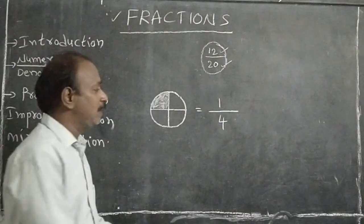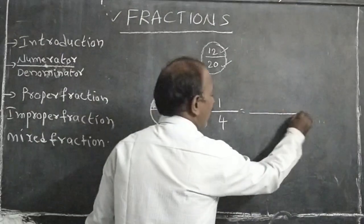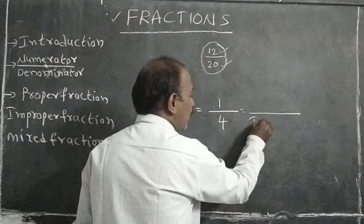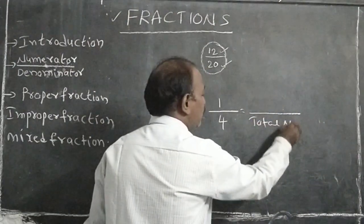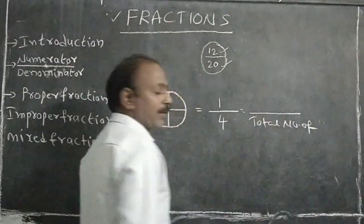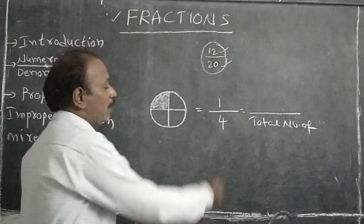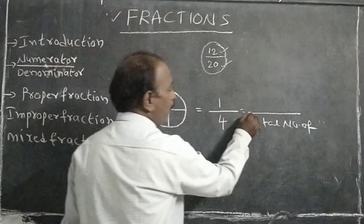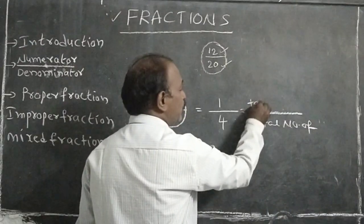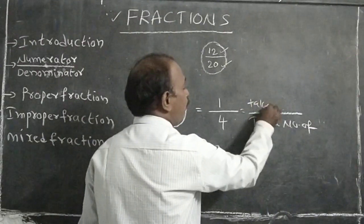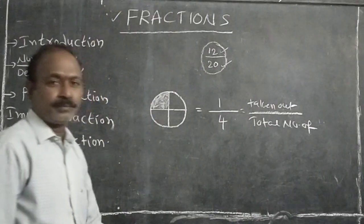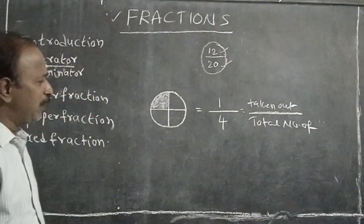The fraction is represented as total number of equal parts in the lower part, and the number of taken-out equal parts in the upper part.